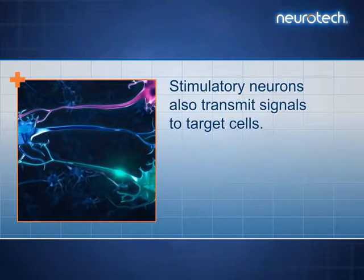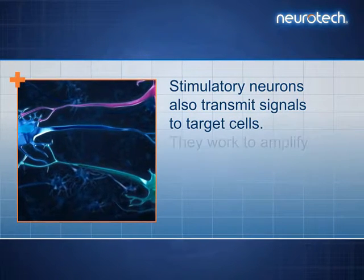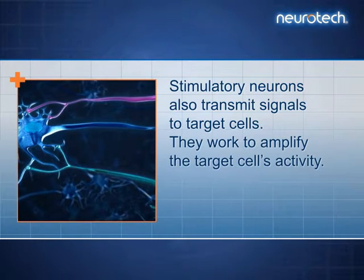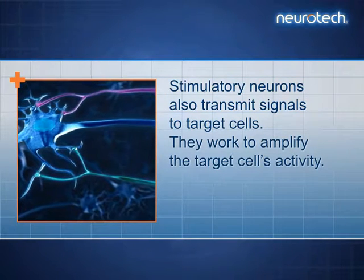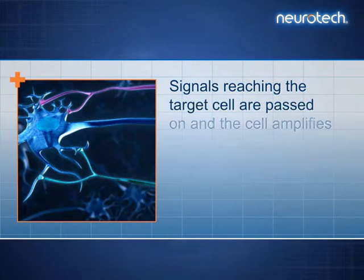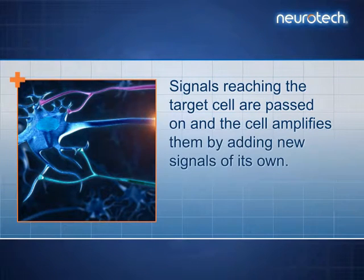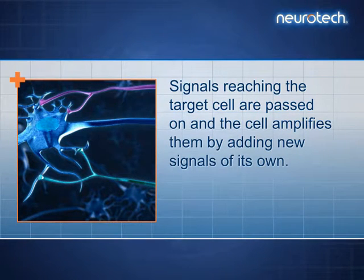Stimulatory neurons also transmit signals to target cells. They work to amplify the target cell's activity. Signals reaching the target cell are passed on, and the cell amplifies them by adding new signals of its own.